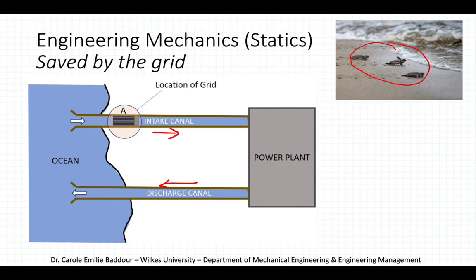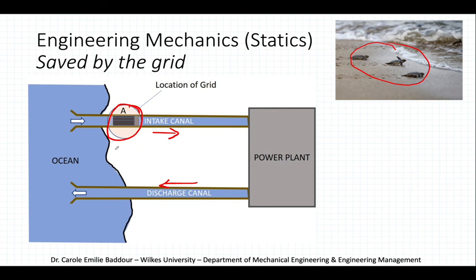The environmental problem arises from young turtles. We have young turtles on the beach and in the water, and the water current in the intake canal entrains turtles, taking them into the plant. This is a serious environmental problem because it causes large numbers of turtles to be killed. The solution shown on the diagram is a grid to intercept turtles before they reach the power plant, saving their lives.